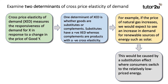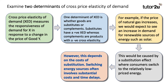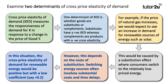For example, consumers might switch to the relatively lower-priced energy. A good example recently has been with the world price of natural gas going up — quite a few consumers have tried to buy off-grid energy solutions, including solar panels. However, and here's the evaluation: this depends on the cost of substitution. Oftentimes switching energy sources involves substantial cost, expense, and time delays. In this situation, the cross price elasticity of demand for renewable energy would be positive, but with a low coefficient of less than 1.2 — inelastic.